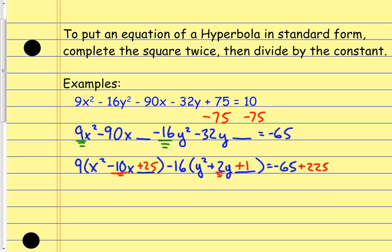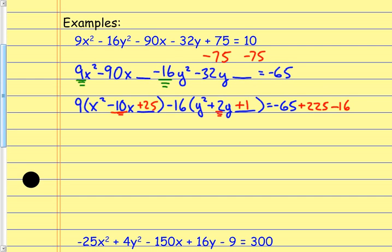For the second parentheses, I added 1 inside, but what I really added to the whole side is 1 × (−16) = −16. So I need to add negative 16 — that is, subtract 16 — from the other side. Now I simplify: the first group factors into (x − 5)², and leaving the −16 out front, the second group factors into (y + 1)². On the right side I combine everything, which gives me 144.